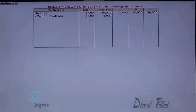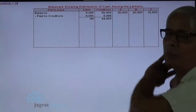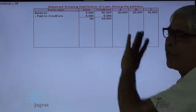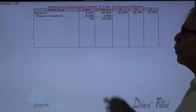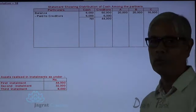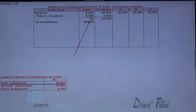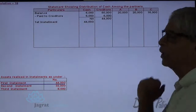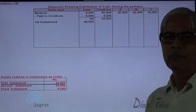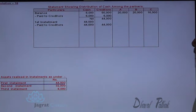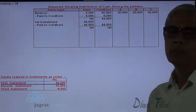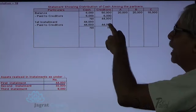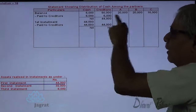Now I go for piecemeal distribution. Cash balance is 6,000; first, you have to pay the outsiders. So 6,000 cash balance is paid to the outsiders — from 50,000, 6,000 gets paid, leaving outsiders' balance at 44,000. Then I received the first installment of 44,000. That has to be applied for payment of outsiders. Creditors' liability is 44,000, and I have 44,000 cash, so I pay 44,000 to the creditors. Cash balance is now 0, and creditors' outstanding balance is also 0.